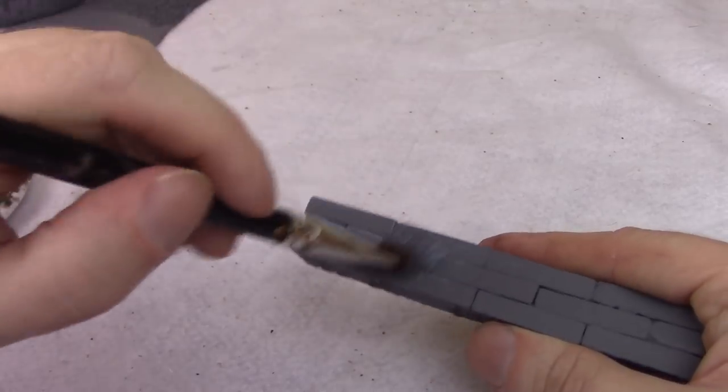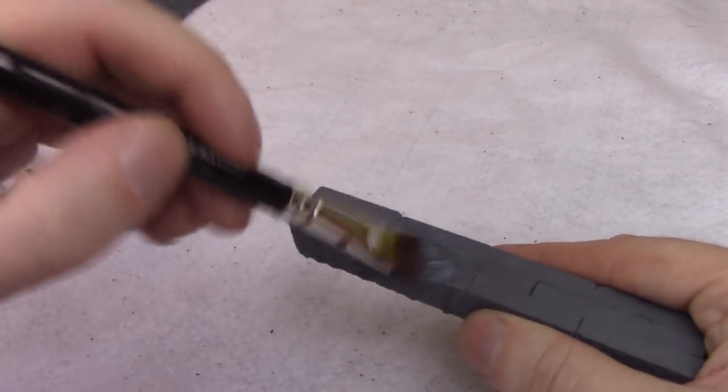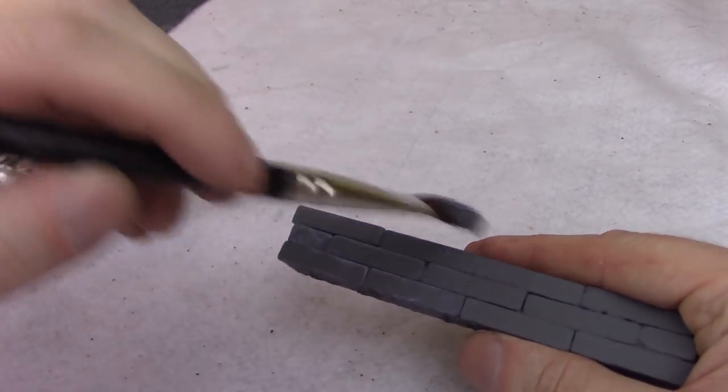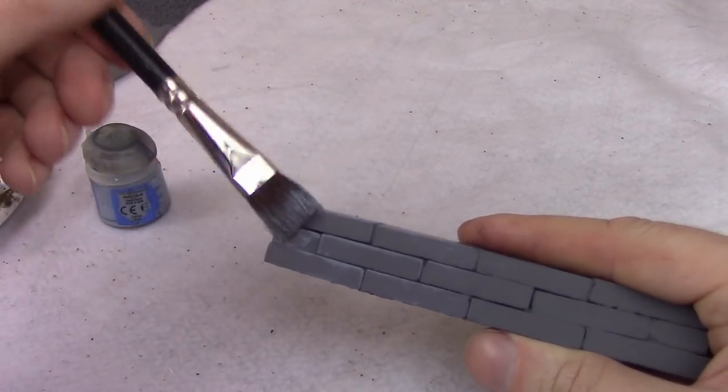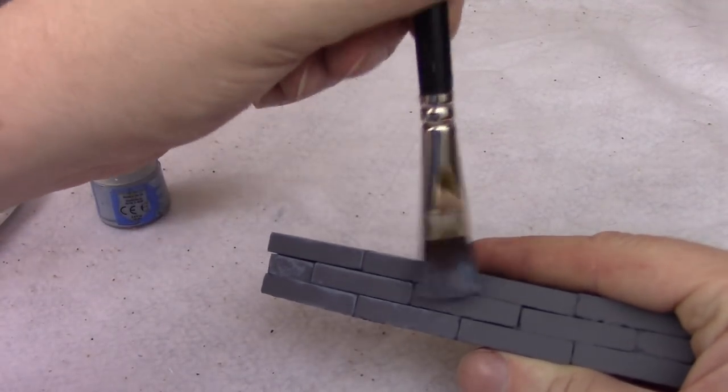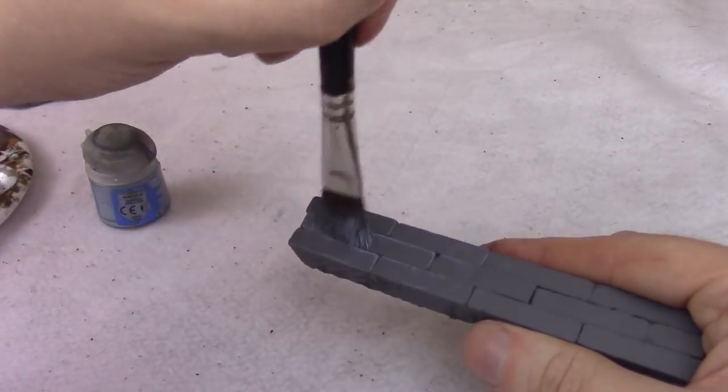For added detail you can put green flock on the little cracks. Make it look like moss, skulls, weapons, whatever. This is about as simple and basic a wall as you can make. And it was super easy and cheap. So no real skill needed for any of this.